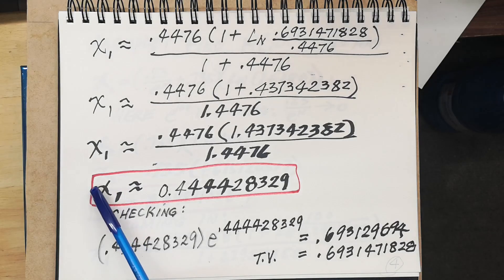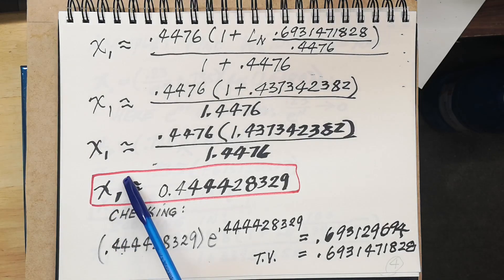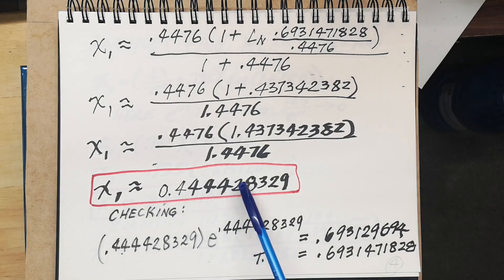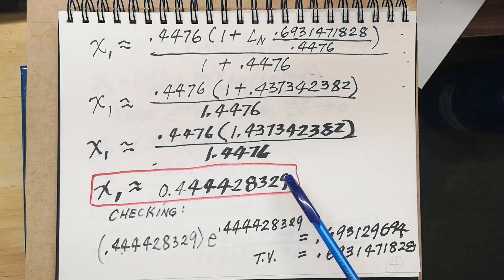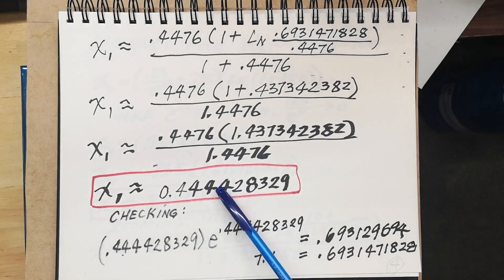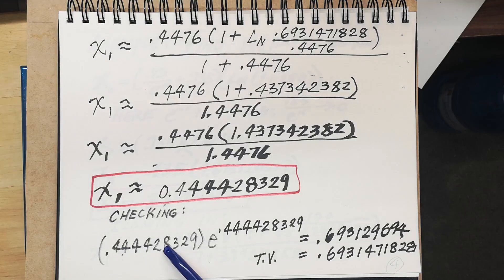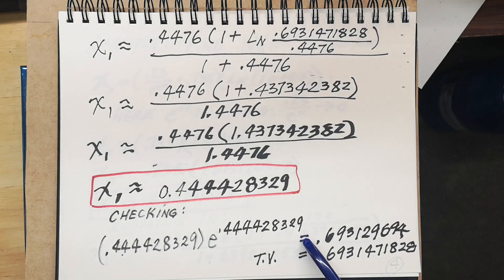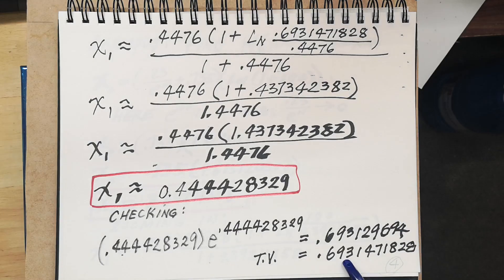Following the calculation, x₁ eventually becomes 0.44476 multiplied by 1.44476 divided by 1.44476. The second approximation x₁ is approximately equal to 0.444428329. You can still use this value to do another iteration. Checking this value: 0.444428329 times e to the same value equals 0.6931296894, while the true value is ln 2 = 0.6931471828, so it's accurate to several decimal places.